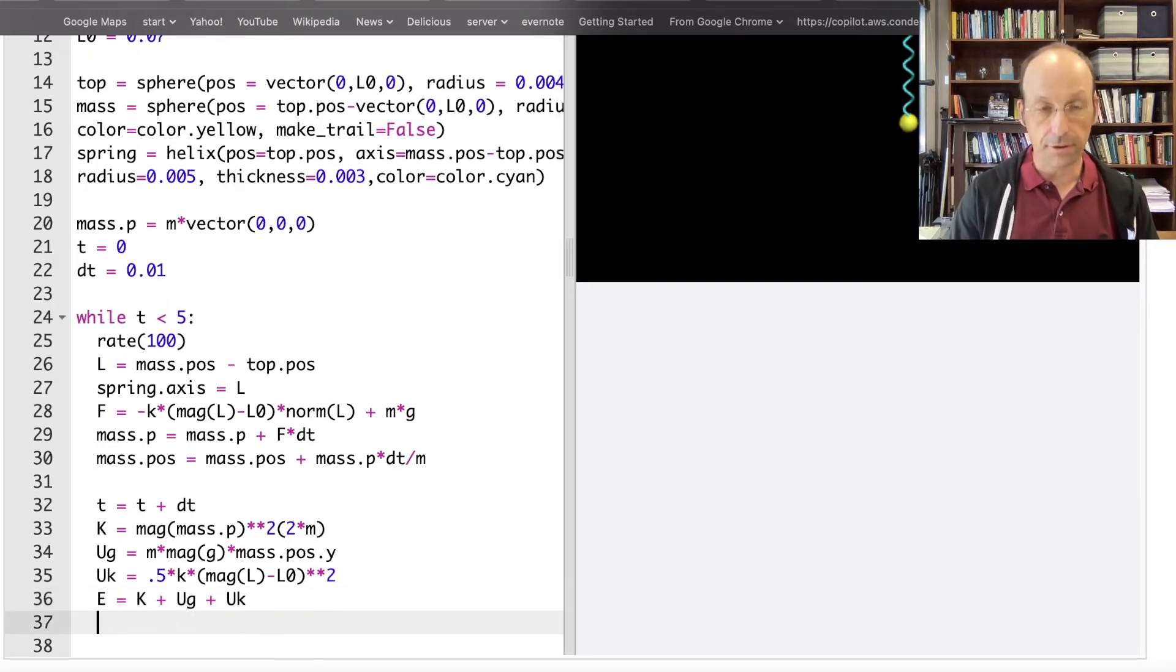Now I'm going to plot all those things. So FK dot plot, its X coordinate is going to be time, its Y coordinate is going to be the kinetic energy.